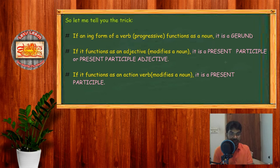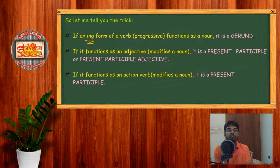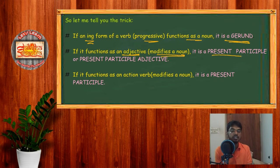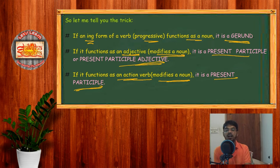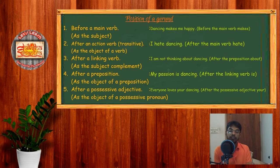We have the third question: is there any trick? If an -ing form of a verb functions as a noun, it is a gerund. If it functions as an adjective — that is, it modifies a noun — it is a present participle or participial adjective. But sometimes it works as an action verb; in that case it is also a present participle. So these are the simple tricks to follow, and there's no confusion if you get them clearly.